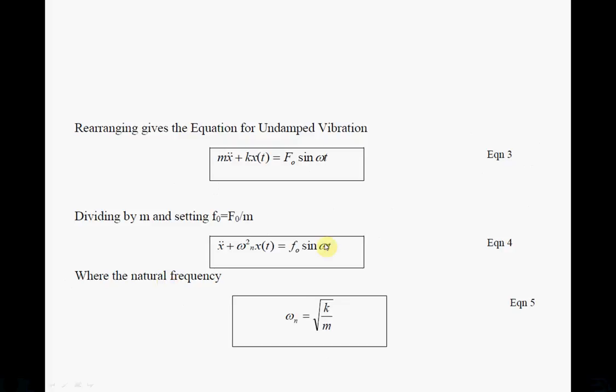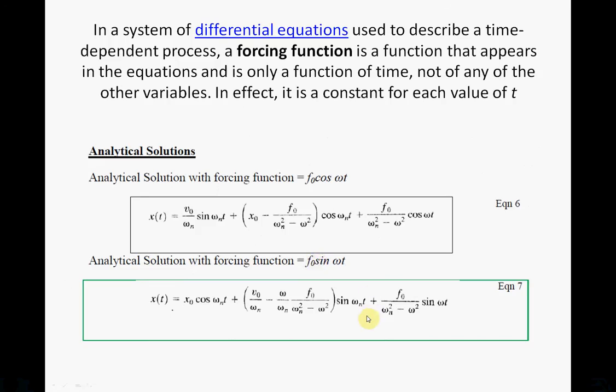Vibrating camera problem - just to remind you, equation 4 is the key thing. Equation 7 is the forcing function. So in a system of differential equations used to describe a time-dependent process, a forcing function is a function that appears in the equations and is only a function of time, not of any of the other variables. So we are going with the forcing function.